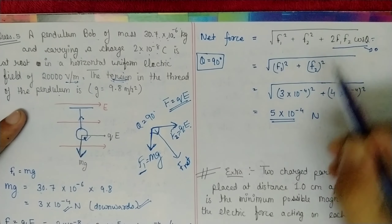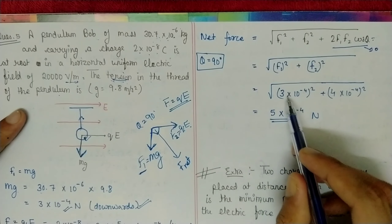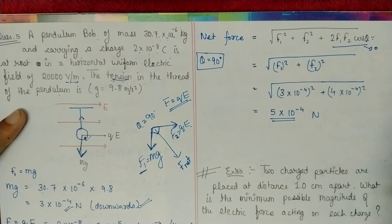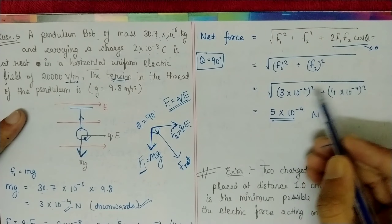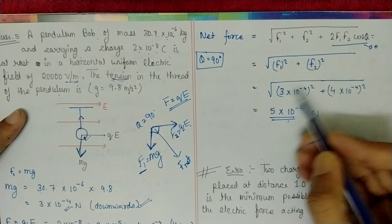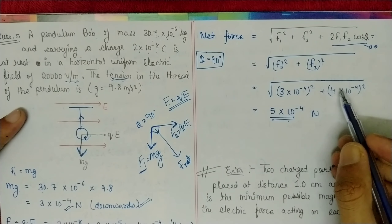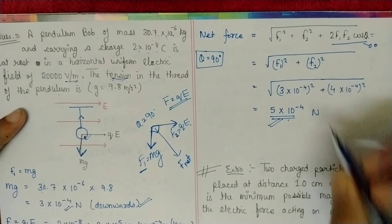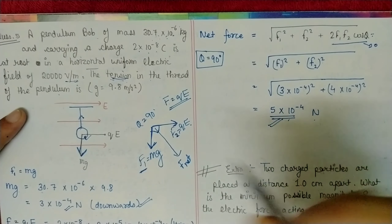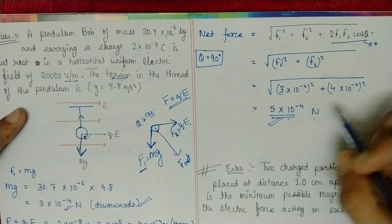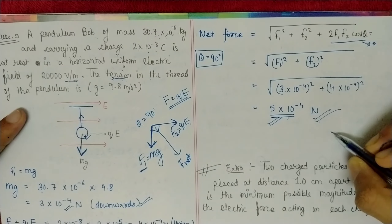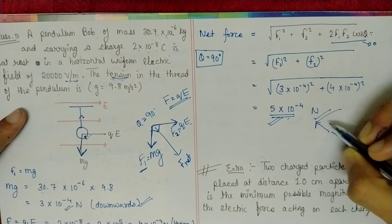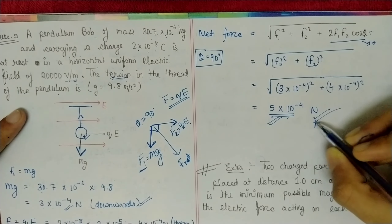So tension T = √(F₁² + F₂²) = √((3×10⁻⁴)² + (4×10⁻⁴)²). Taking 10⁻⁴ common: √(9 + 16) × 10⁻⁴ = √25 × 10⁻⁴ = 5 × 10⁻⁴ N. The direction wasn't asked; only the magnitude. The tension acts opposite to the net force direction.